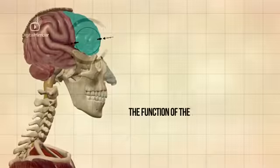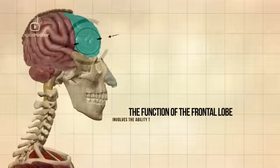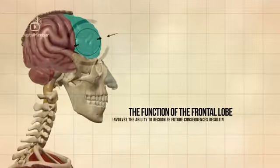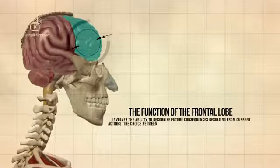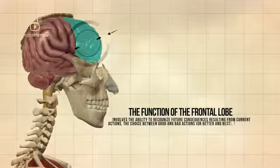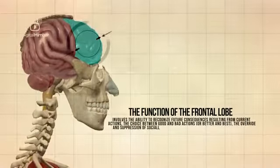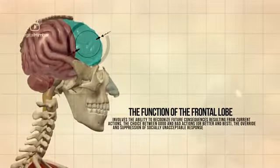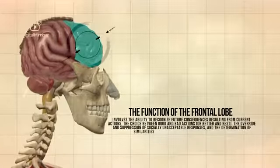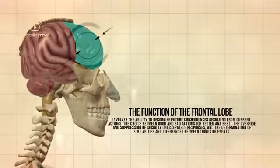The function of the frontal lobe involves the ability to recognise future consequences resulting from current actions, the choice between good and bad actions or better and best, the override and suppression of socially unacceptable responses, and the determination of similarities and differences between things or events.